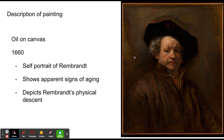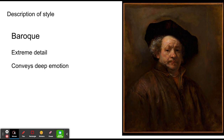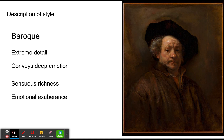It basically just shows a detailed description of what Rembrandt came to later in life. The Baroque style usually shows extreme detail, conveys deep emotion, has sensuous, sensual richness — a richness that appeals to the senses. It creates emotional exuberance and also depicts illusion.